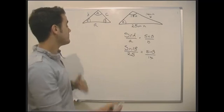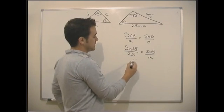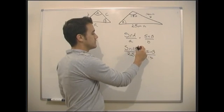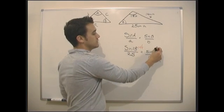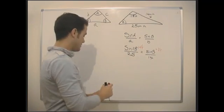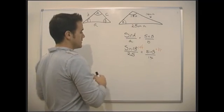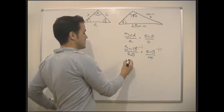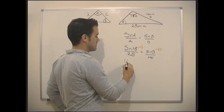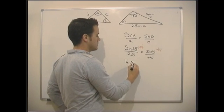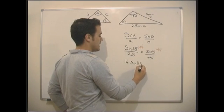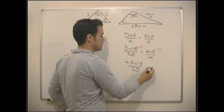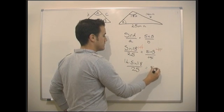So let's just quickly rearrange. We can see it's quite easy. We just need to times both sides by 14 in order to get sine B on its own, because they will then cancel. So we end up with 14 times sine 118 over 25 equals sine B.